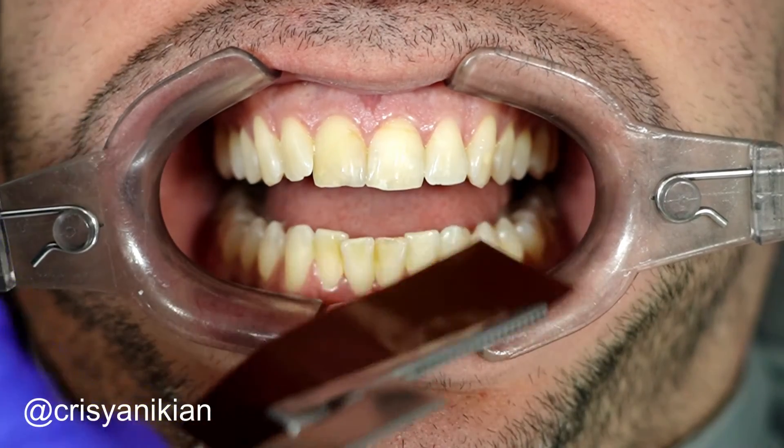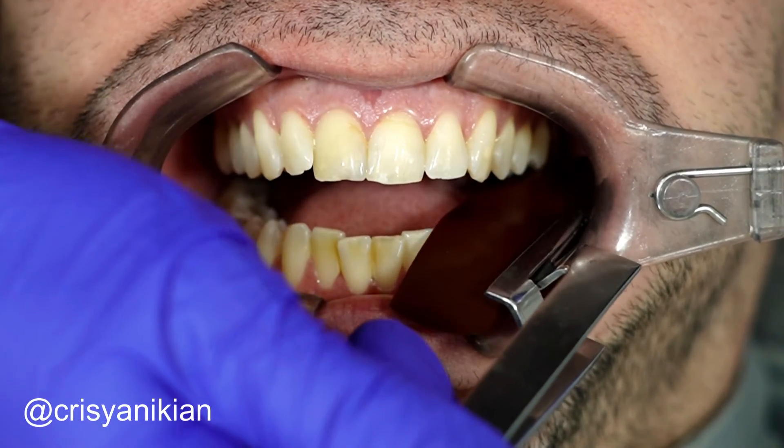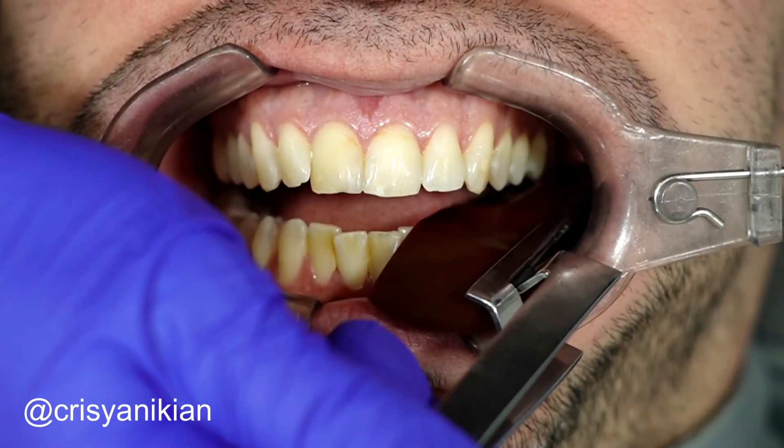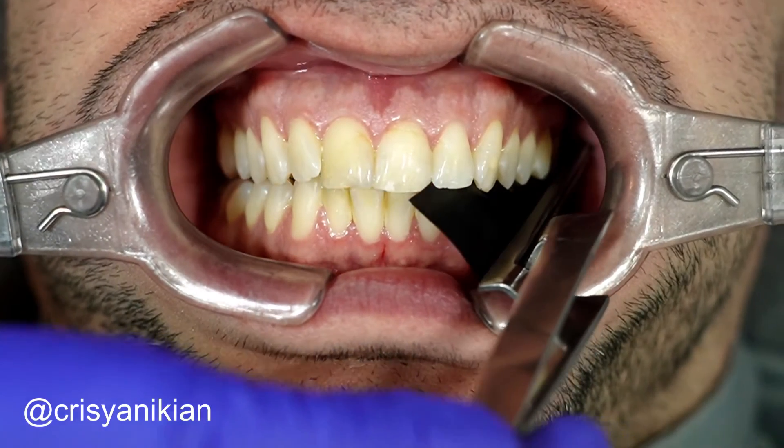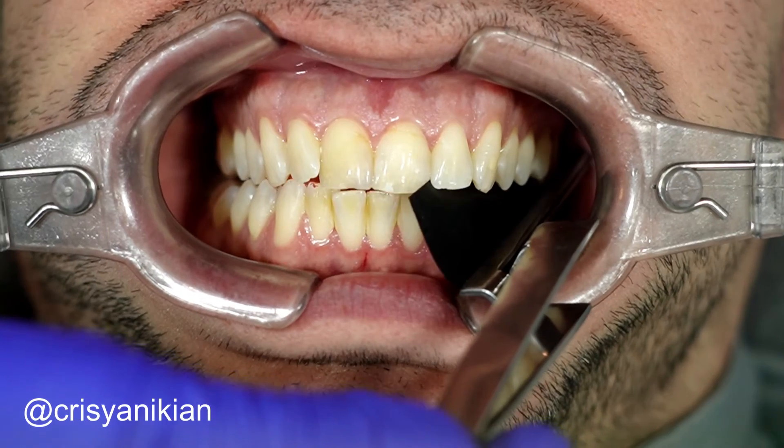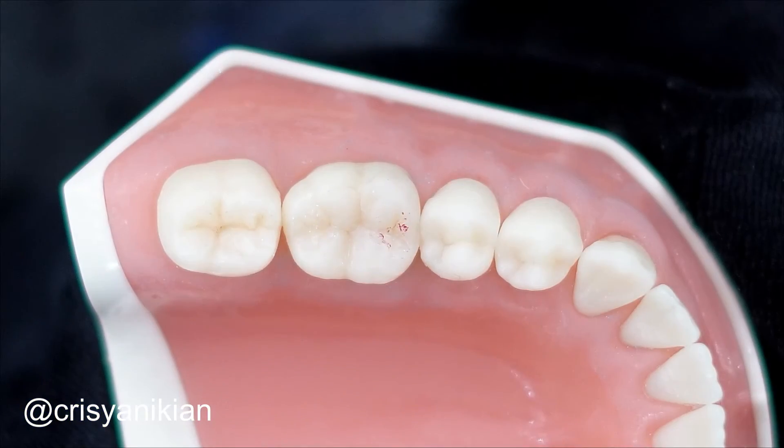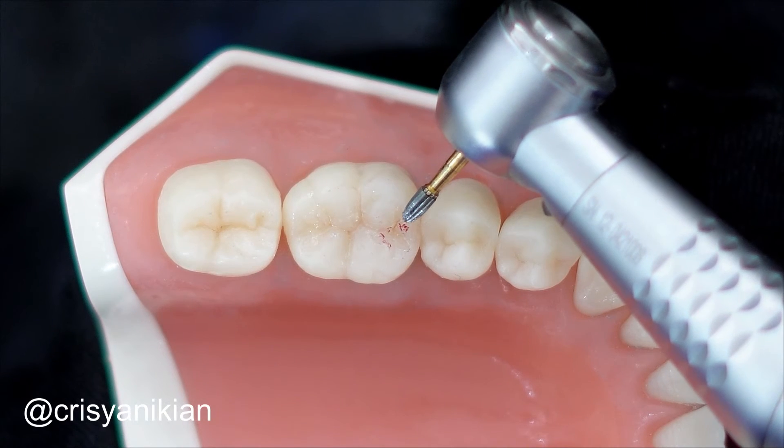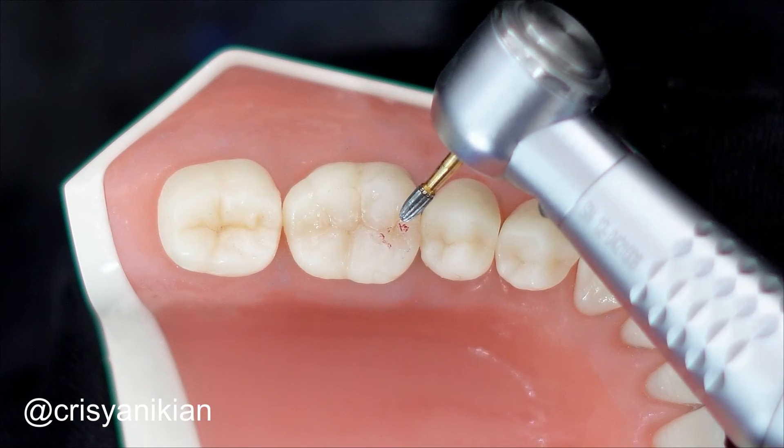Check the occlusion by having the patient bite on carbon between the teeth. Ask the patient to bite on maximum habitual intercuspation and make lateral and protrusive movements.